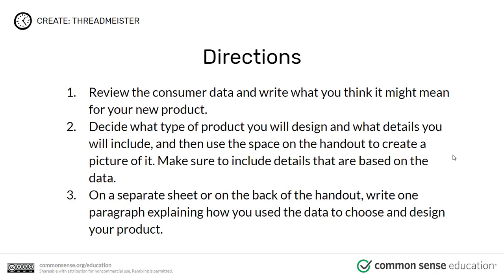You're going to be given a worksheet called 'Threadmeister' — ask Mr. Ringo for this worksheet. There are three parts: first, review the consumer data and write what you think it means for your new product. Second, decide what type of product you will design, what details you will include, and use the space on the handout to draw a picture of it — make sure details are based on the data from part one. Third, on a separate sheet or the back of the handout, write one paragraph explaining how you used the data to choose and design your product. Be ready to share your product at the end of class, then paste the Threadmeister worksheet into your notebooks.